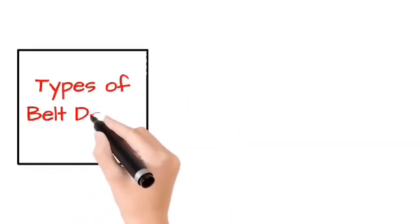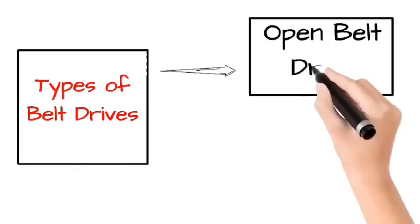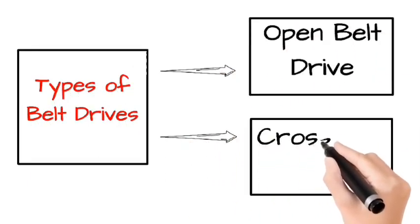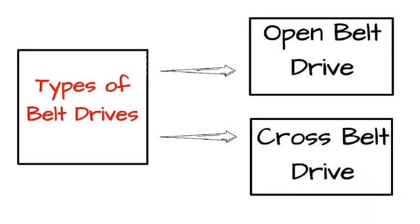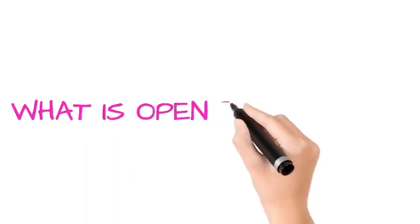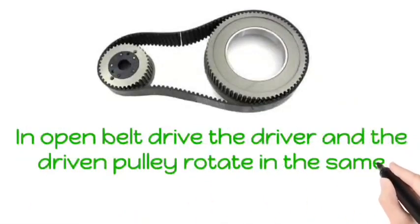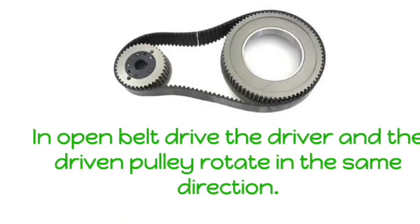Types of belt drives. First, open belt drive and second is the cross belt drive. First, we will see open belt drive. What is an open belt drive? In open belt drive, the driver and the driven pulley rotate in the same direction.